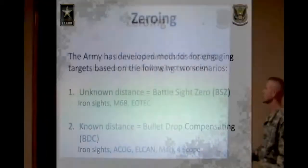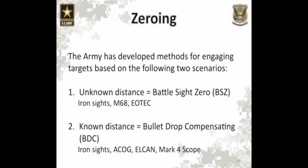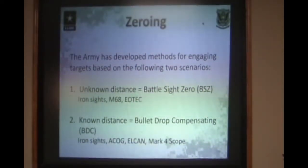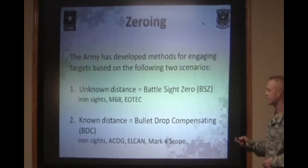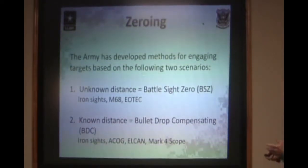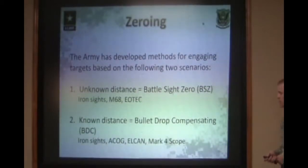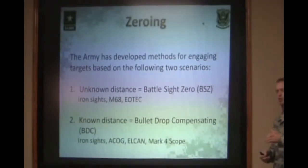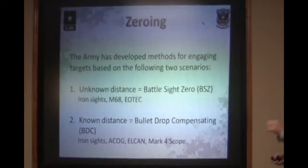The Army has developed two methods for engaging targets based on two scenarios. You have unknown distance, which is your battle sight zero — your iron sights, your M68, your EOTech, and so on. And then you have known distance, which is called bullet drop compensating. Your iron sights can also be used as a bullet drop compensator. Your ACOG, your LCAN, your Mark IV scopes all have ranging reticles built in, which allows you to compensate for the drop of that bullet.